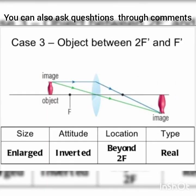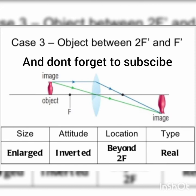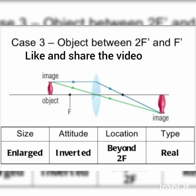Case 3: Object between f and 2f. One ray is parallel to the principal axis and bends through the focus; the other passes through the optical center. The image formed is larger in size, the attitude is inverted, and the location is beyond 2f — it is a real image.